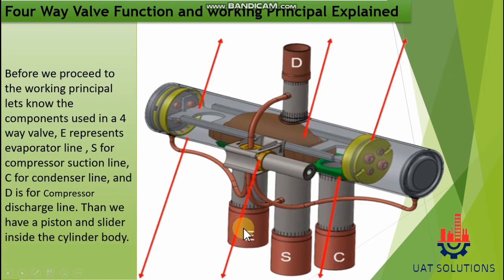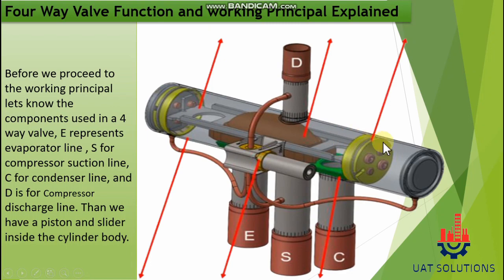E represents the evaporator line, S for compressor suction line, C for condenser line, and D is for compressor discharge line. Then we have a piston and slider inside the cylinder body.